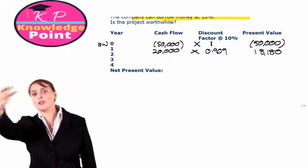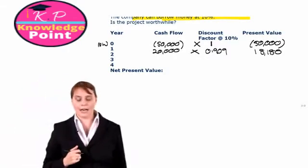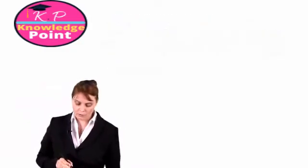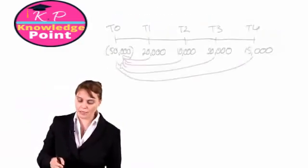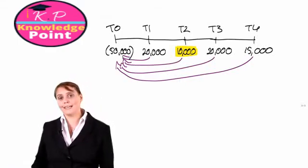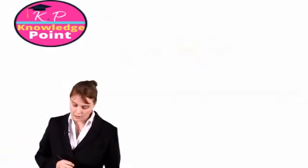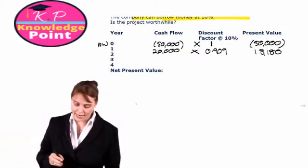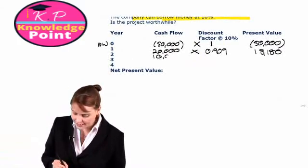Let's keep going. In two years' time, what is our cash flow going to be? Well, we saw when we did our timeline, in two years' time we'll have a cash inflow of $10,000. So we've got $10,000.